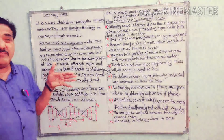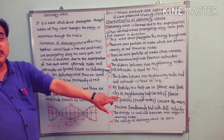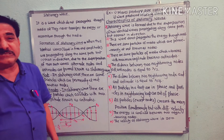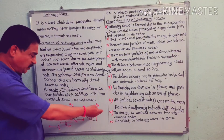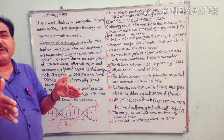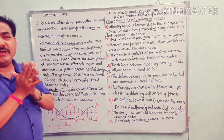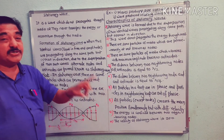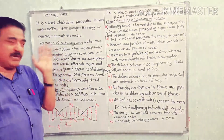Energy is confined between two neighboring nodes. The velocity of a stationary wave is zero — it is stationary, meaning it does not propagate.